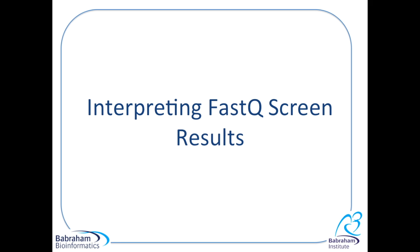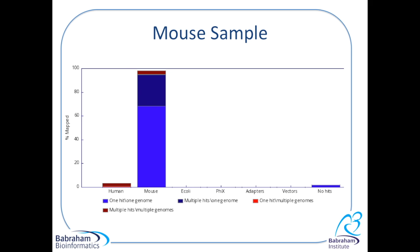In this video we're going to look at a small number of FastQScreen reports and try and interpret what they mean. The first sample we're going to look at is a mouse sample and we've screened the reads which have come off our sequencer against human, mouse, e.coli, phi x, adapter sequences and commonly used cloning vectors.